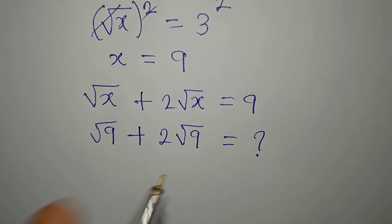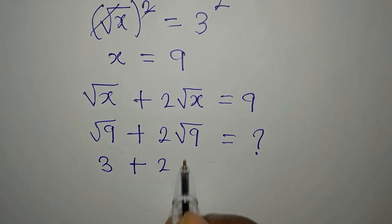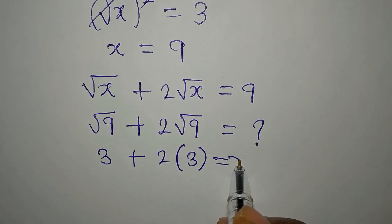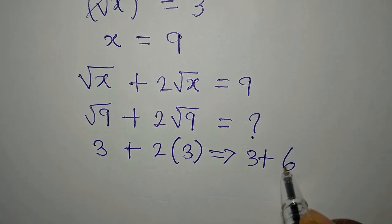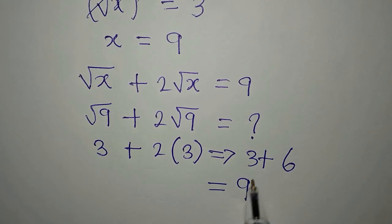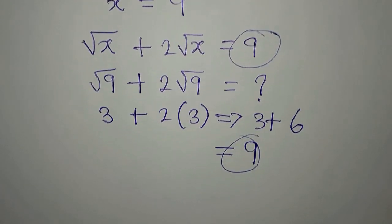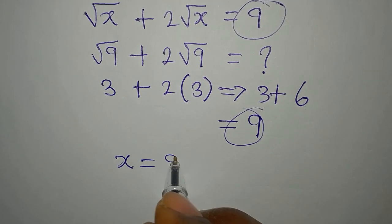Square root of 9 is 3, plus 2 square root of 9 is 3 again. And this means that we are having 3 plus 6, and 3 plus 6 is giving us 9. And it is the same 9 we had on the right hand side of the equation, so our x equals 9 satisfies the equation.